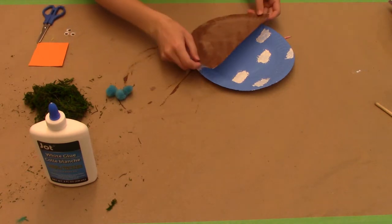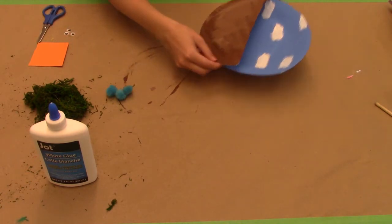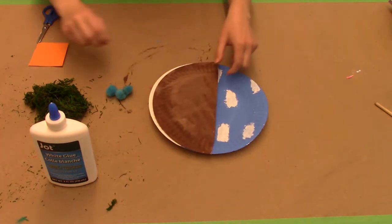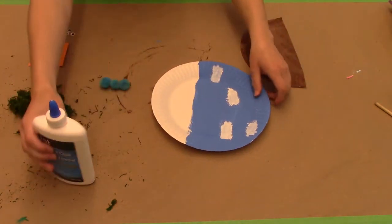In your craft pack you're going to have two paper plates. We have already decorated them so you're going to make the half plate look like the nest and then the full plate look like the sky.